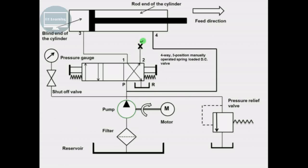Since port 2 is blocked, fluid enters into the rod end of the cylinder and causes the backward motion of the piston rod. The liquid from the blind end of the cylinder from port 3 goes to reservoir R.